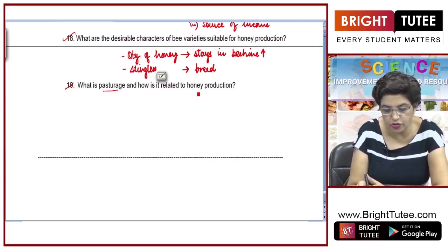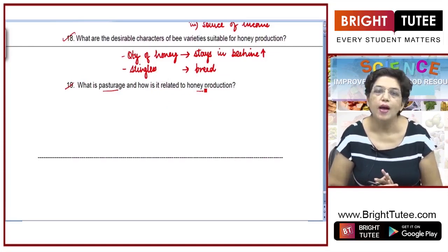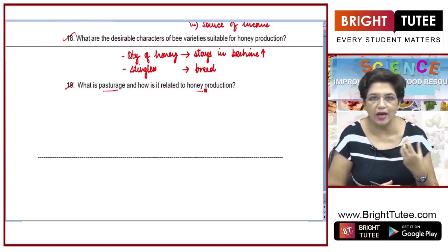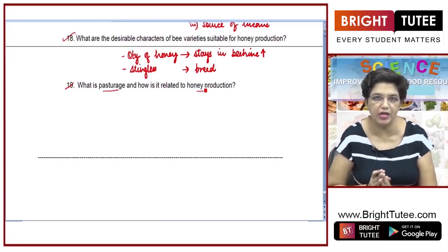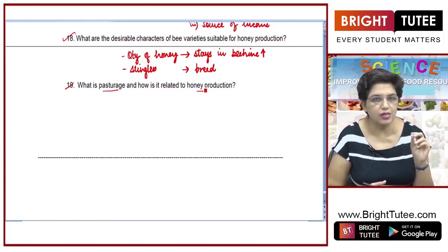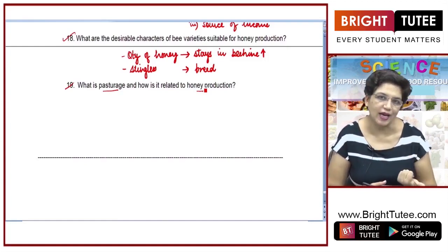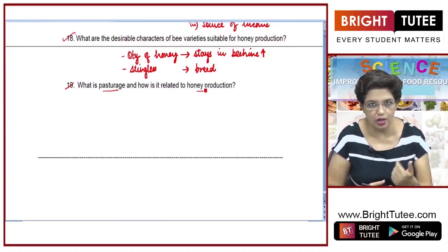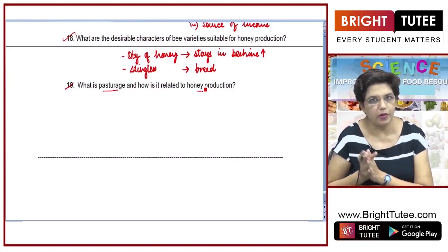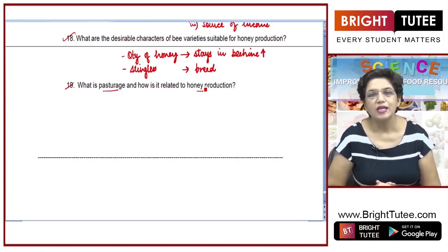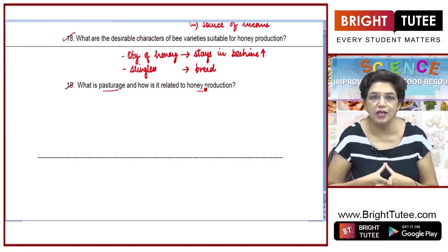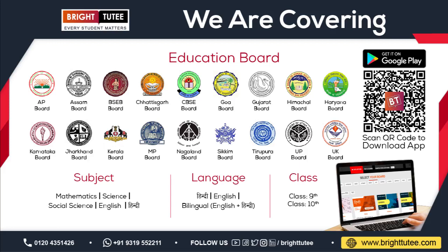Last question: what is pasteurage and how is it related to honey production? Pasteurage is the quality of the flowers or flowering plants growing around the apiaries where honeybees are promoted to grow. Whatever pasteurage is available, the taste and quality of honey will depend upon it. If you grow good pasteurage around the apiaries, the quality and quantity of the honey will be better. So from this chapter, we learned that animal husbandry can be improved by scientific methods to improve the quality and quantity of food obtained from animals. Thank you, students.